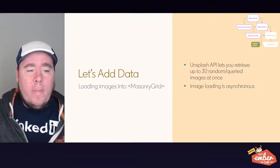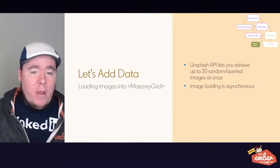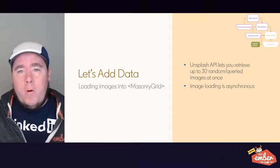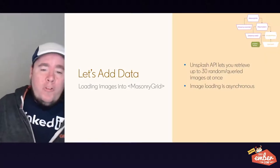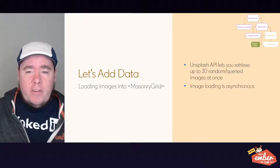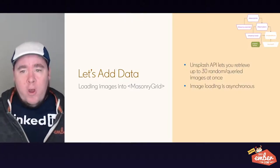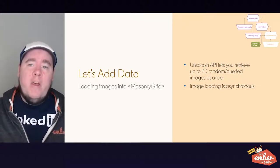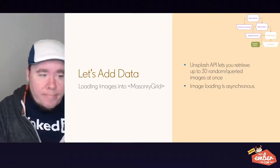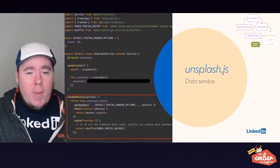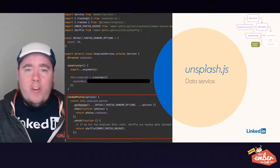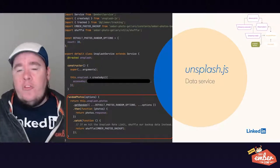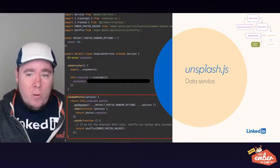Let's add some data to our masonry grid on the consumer side. I've used the Unsplash API, which allows me to retrieve up to 30 images at once. For this demo I queried on the keyword 'Ember', because why not? I'm also going to load images asynchronously — we need to account for the fact that once we set the URL on image elements, there is asynchronous loading of the image itself in the browser. The data service just interfaces with the Unsplash API, with a method that retrieves random photos.